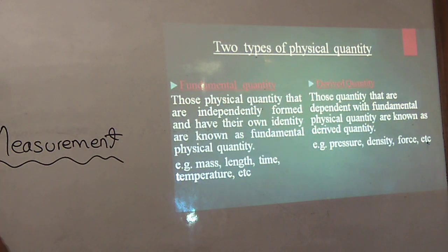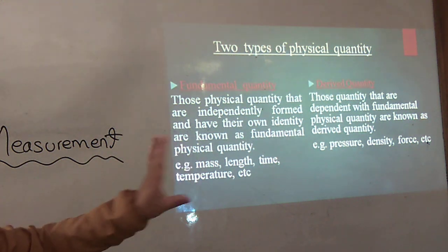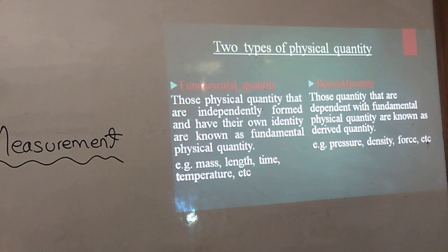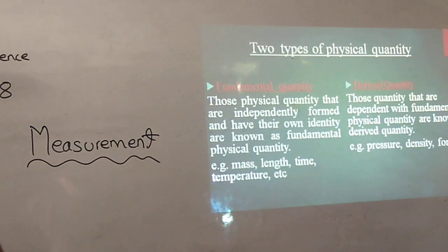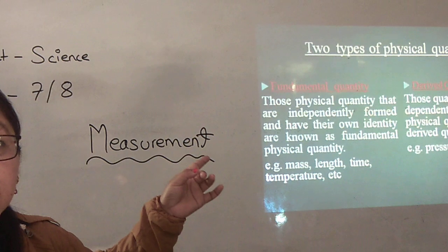Whereas the derived quantity, those quantity that are dependent with the fundamental physical quantity, these are the fundamental quantities that are independent. That is called derived quantity, such as the pressure, density, force, etc. that belongs to the derived quantity which depends on the fundamental quantity.